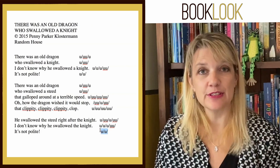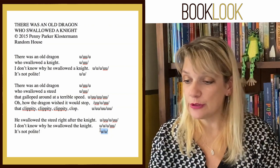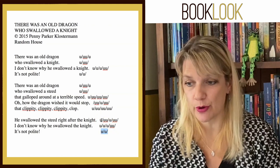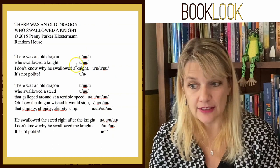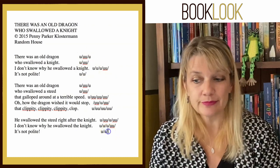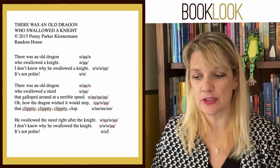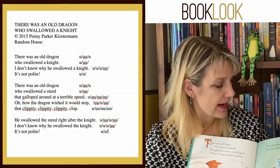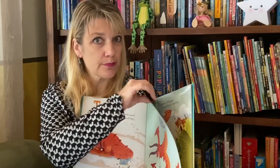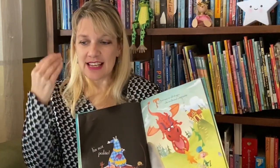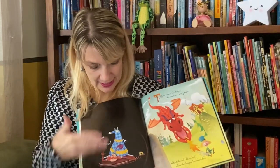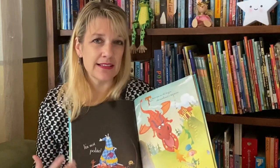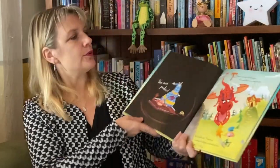Another device I really love in this book is Penny's use of 'It's not polite.' Whether it's tetrameter or iambic, we always have four beats. But when we get to 'It's not polite,' she takes away two of those feet — she only gives us two feet. What she creates is a great pause and punctuation point: 'I don't know why he swallowed a knight' — pause, pause, pause, pause — 'it's not polite.' Taking away those last two feet makes me pause even more. I linger on the wonderful illustration, and it gives me a nice break before I launch into the next thing: 'There was an old dragon who swallowed a squire.'